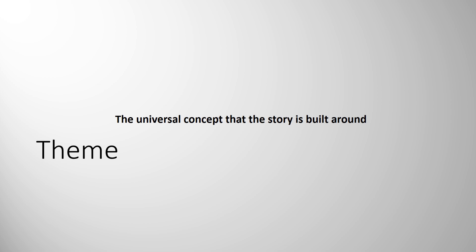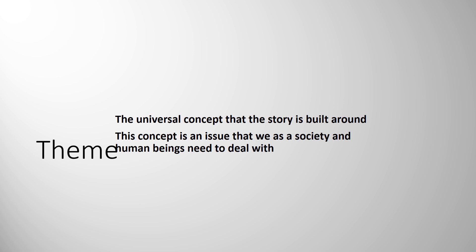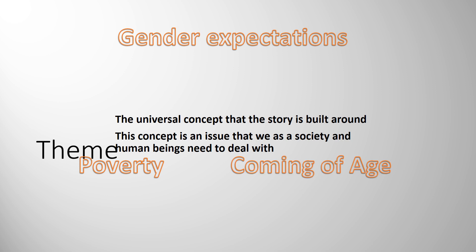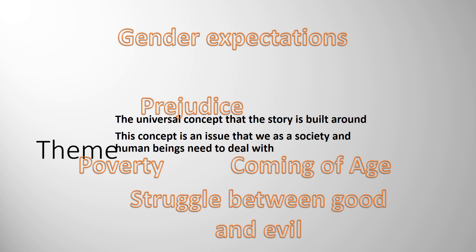Now we take all those literary elements and use them to understand the theme — the universal concept the story is built around. The concept is usually an issue that we as a society and human beings need to deal with, so it's common to us as human beings. It could be things like gender expectations — what does society expect of people based on whether they're a man or a woman — poverty, coming of age, prejudice, the struggle between good and evil, the repression of women, and all sorts of different issues that could be the theme we pull from the story.